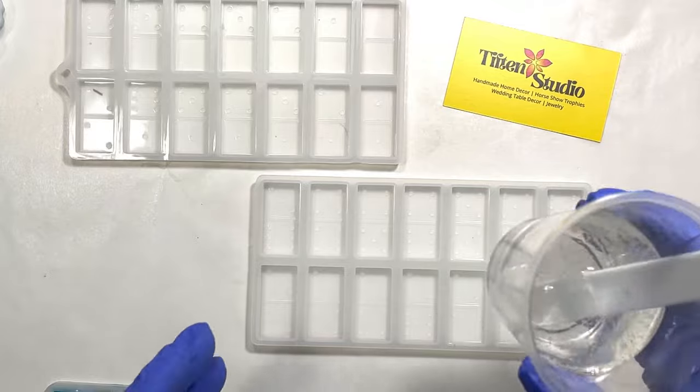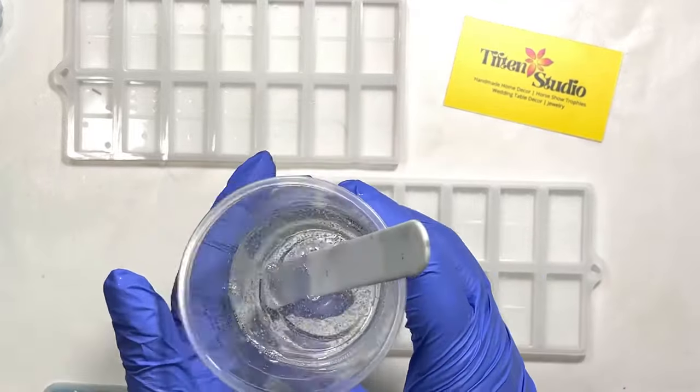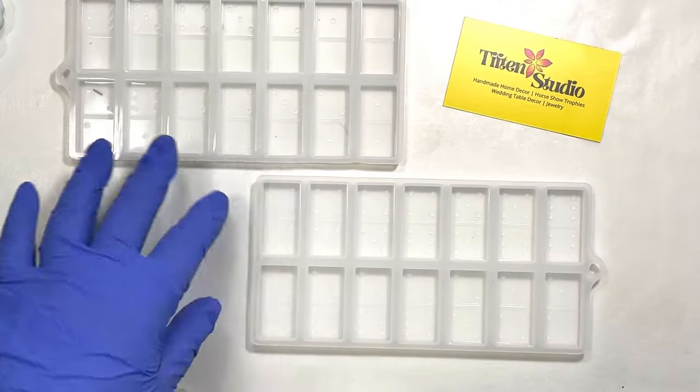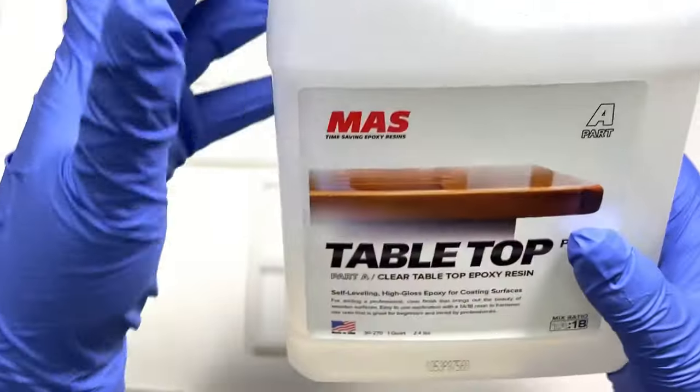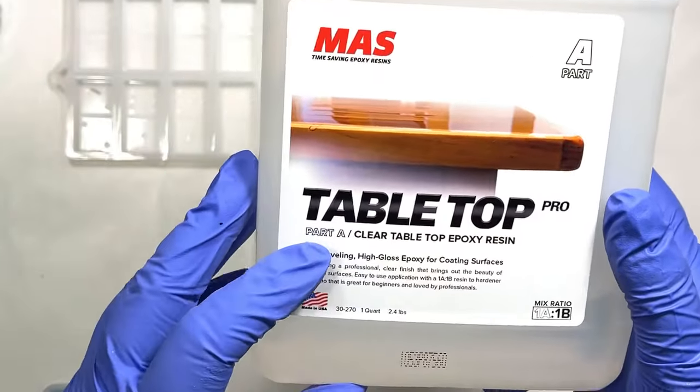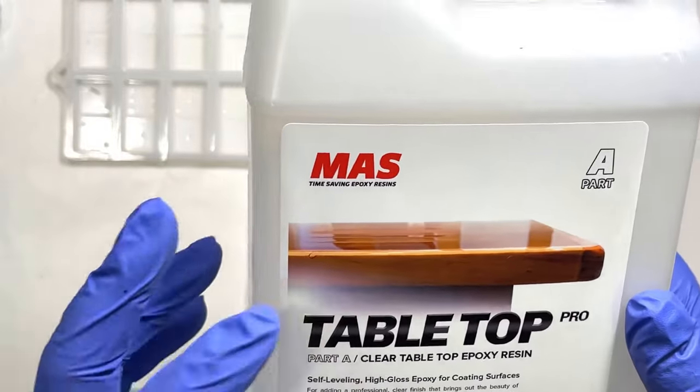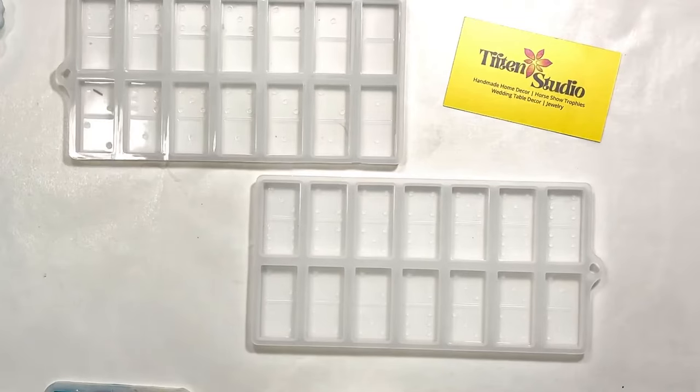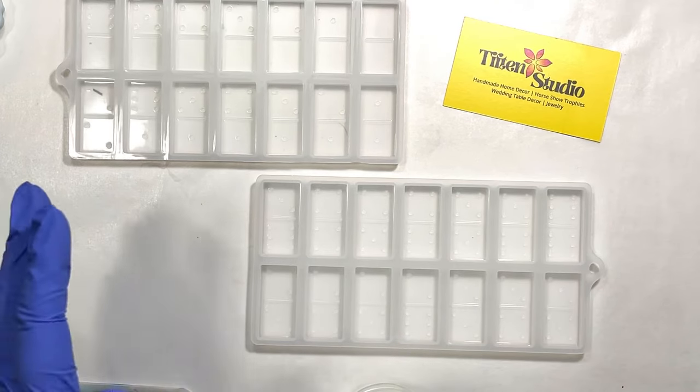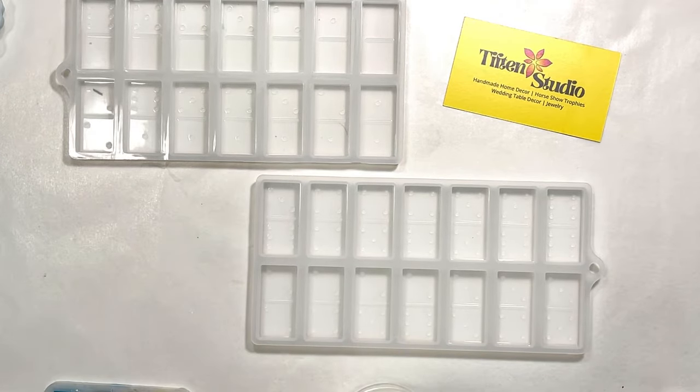So to start with, for the first layer I've just mixed up four ounces of resin because that'll fill everything about halfway. For this project I'm using the Tabletop Pro from Moss. This is a really nice epoxy but the work time is only about 20 to 30 minutes.